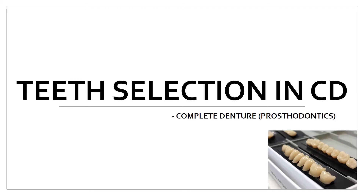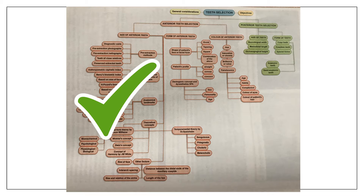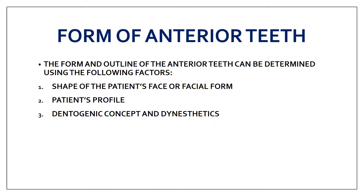Welcome back. Moving on towards the next part of teeth selection in complete denture. In the last part we covered anterior teeth selection, specifically the size. Now we're moving on to the next considerations for anterior teeth selection, and also posterior teeth selection. Most importantly, we're going to cover the dentogenic concept, which is a very commonly asked question.